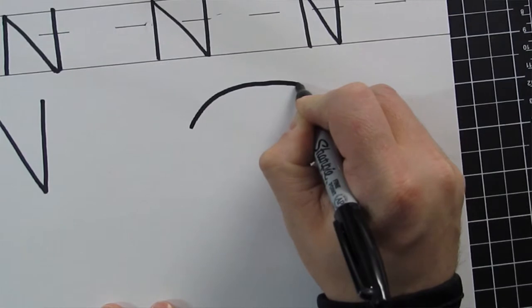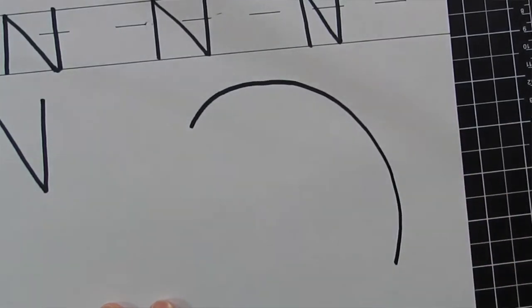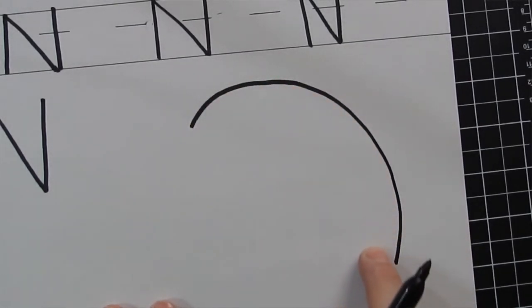So we're gonna start up here and make a big round curved line and we're gonna bring it down just like that. It's like a big arc.